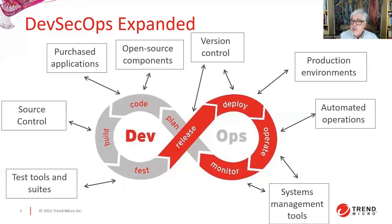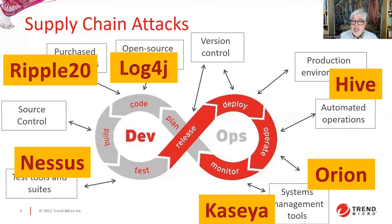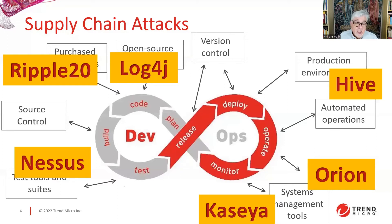The problem is that all of these things have external dependencies. Here are some issues that have shown up as supply chain attacks over the past few years: Hive ransomware targets ESXi, the VMware environment. The SolarWinds Orion attack and the Kaseya attack involved corrupting the supply chain for systems management tools. Nessus is a network security tool that can be used as an attack vector. Ripple 20 refers to a set of vulnerabilities in TCP/IP stacks that have been around for a decade or more. And Log4j is a piece of open source code incorporated in many products that turned out to have a bug in it.